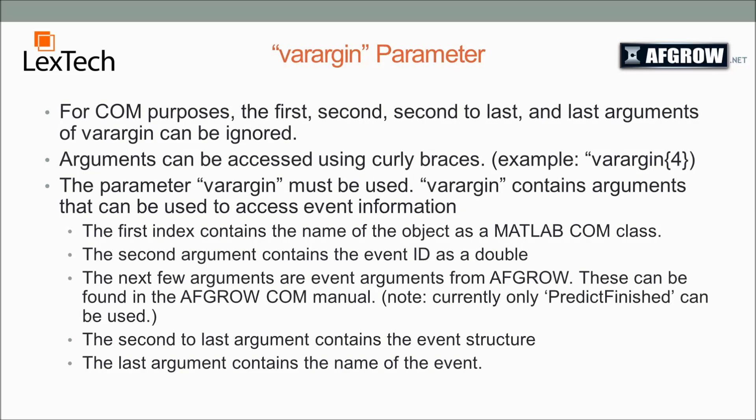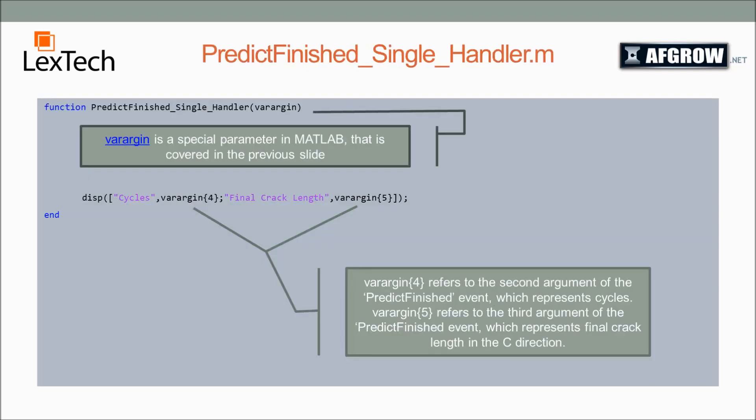So the varargin is a type of variable in MATLAB. It can contain multiple types of elements. These elements can be accessed using curly braces, as shown here. The parameter varargin must be used with these event handlers, otherwise it won't work. Down here, I cover the things that are passed into this array-like structure. The first two are mostly to be used just with MATLAB, and the last two just to identify what type of the event is. The stuff that we're actually going to be concerned with is at the indexes 3 through the second-to-last index.